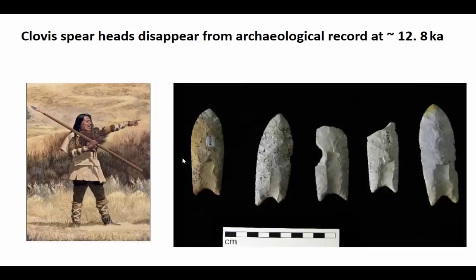Around the time of the Younger Dryas, archaeologists have noted that a major type of spearhead called the Clovis point disappears from the archaeological record. Presumably, these spearheads were being made by an ancient Clovis people who were using them to hunt large game in North America in particular. So what happened to these people? Did they disappear? Did they migrate? Did they go extinct? And how does it relate to the Younger Dryas?